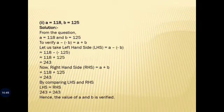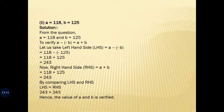Second case: a = 118 and b = 125. We verify a minus (minus b) equals a plus b. LHS: 118 minus (minus 125) = 118 plus 125 = 243. RHS: 118 plus 125 = 243. Comparing LHS and RHS, both values are the same — 243 — hence verified.